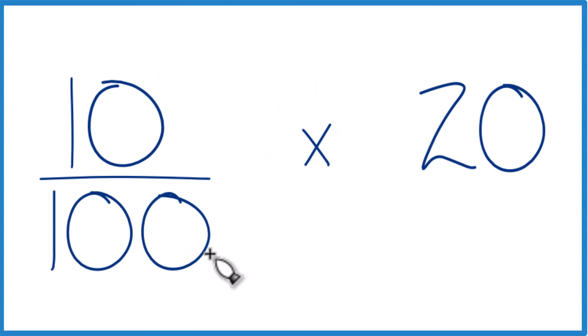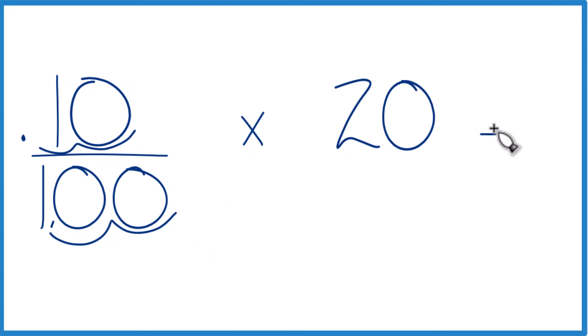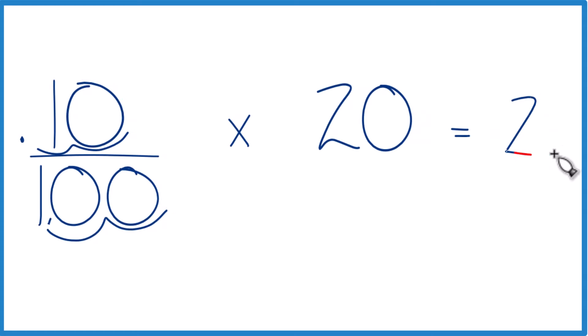10 divided by 100, we could move our decimal place 1, 2, so that's just 0.1 over 1, which is just 0.1. So 0.1 times 20, that actually equals 2.